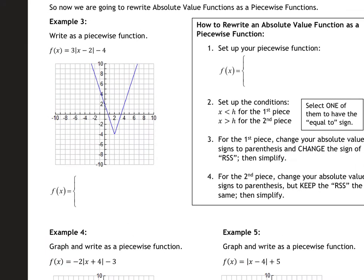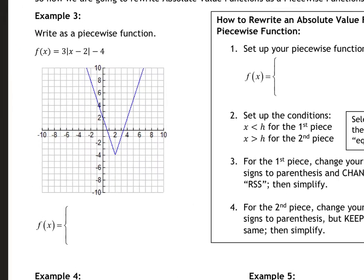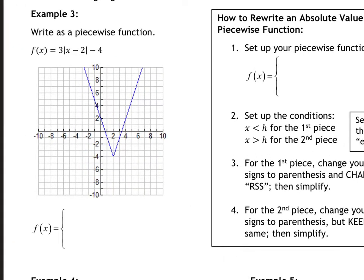So what we have here is three times (x minus 2) minus 4. For the left side, we're going to take our negative three, flip that sign, and keep everything else. So we flip the sign for the left side and simplify: negative 3x plus 6 minus 4 gives us negative 3x plus 2.